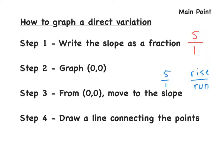If the denominator is negative 1, we'd move to the left 1, but since this is positive, we'd move to the right 1. Step 4: once we have our point (0, 0) and the new point — which would be at (1, 5) — we draw a line connecting the points, and there's our graph for the direct variation.